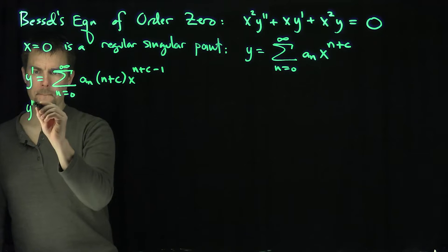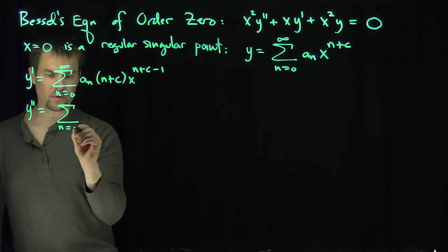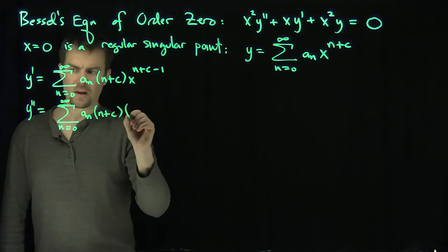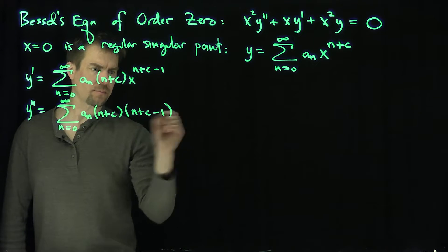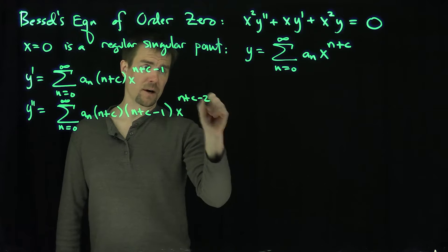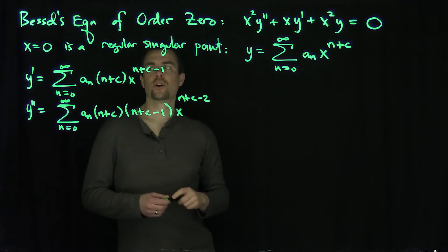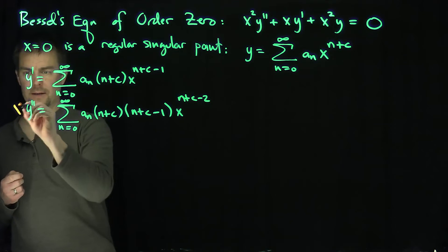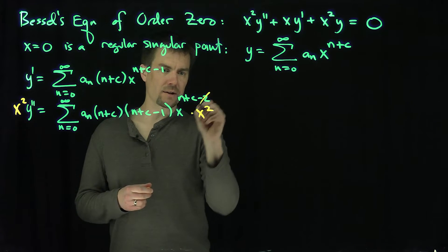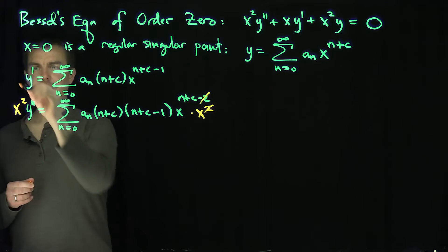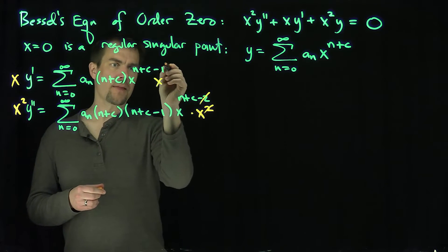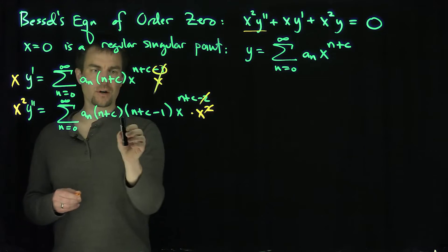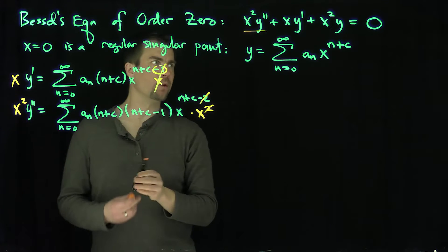And y double prime is the sum from n equals 0 to infinity of a_n times (n plus c)(n plus c minus 1) times x to the n plus c minus 2. Now, if I multiply y double prime by x squared, the x squared cancels the minus 2 in the exponent, and multiplying y prime by x cancels the minus 1. So each of these terms starts at n equals 0 and has power of x equal to n plus c.